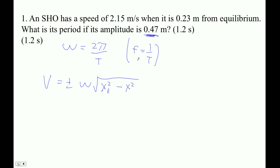So the amplitude is 0.47, that's this guy. 0.23 is this guy. And then it has a speed of, okay, so now we have this guy. So we have everything we need to figure out omega.